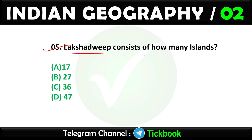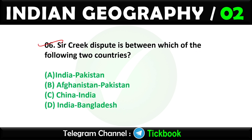Question five: Lakshadweep consists of how many islands? Option number C is the right answer: 36. Question number six: Sir Creek dispute is between which of the following two countries? Option number A is the right answer: India and Pakistan.